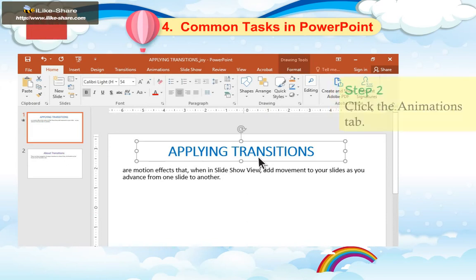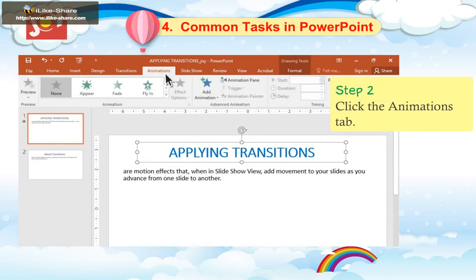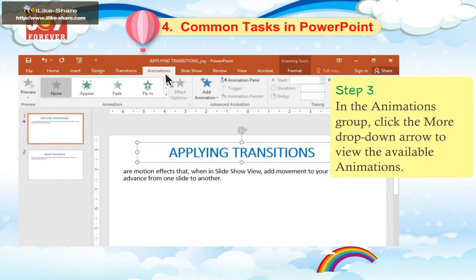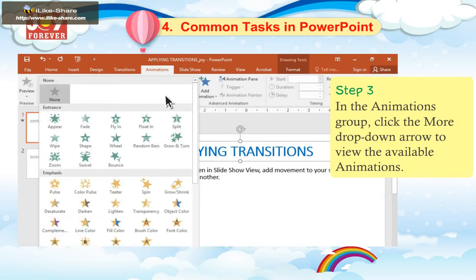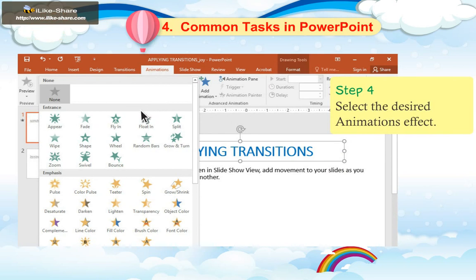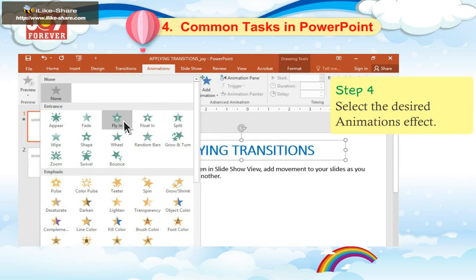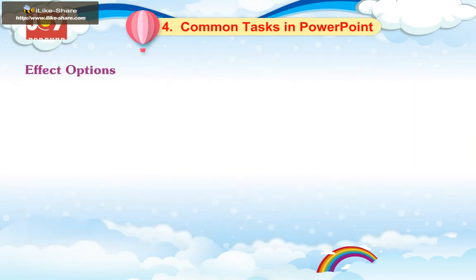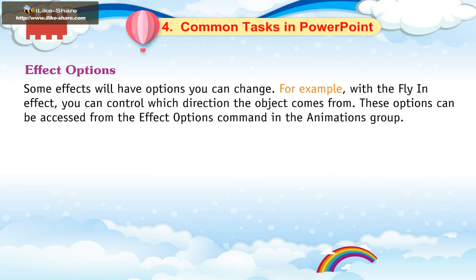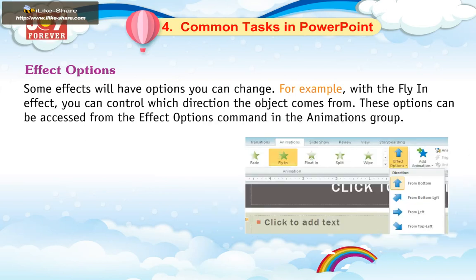To apply an animation to an object: 1. Select an object. 2. Click the Animations tab. 3. In the Animations group, click the More drop-down arrow to view the available animations. 4. Select the desired animation effect. 5. The object will now have a small number next to it to show that it has an animation. Also, in the slide pane, the slide will now have a star symbol next to it.